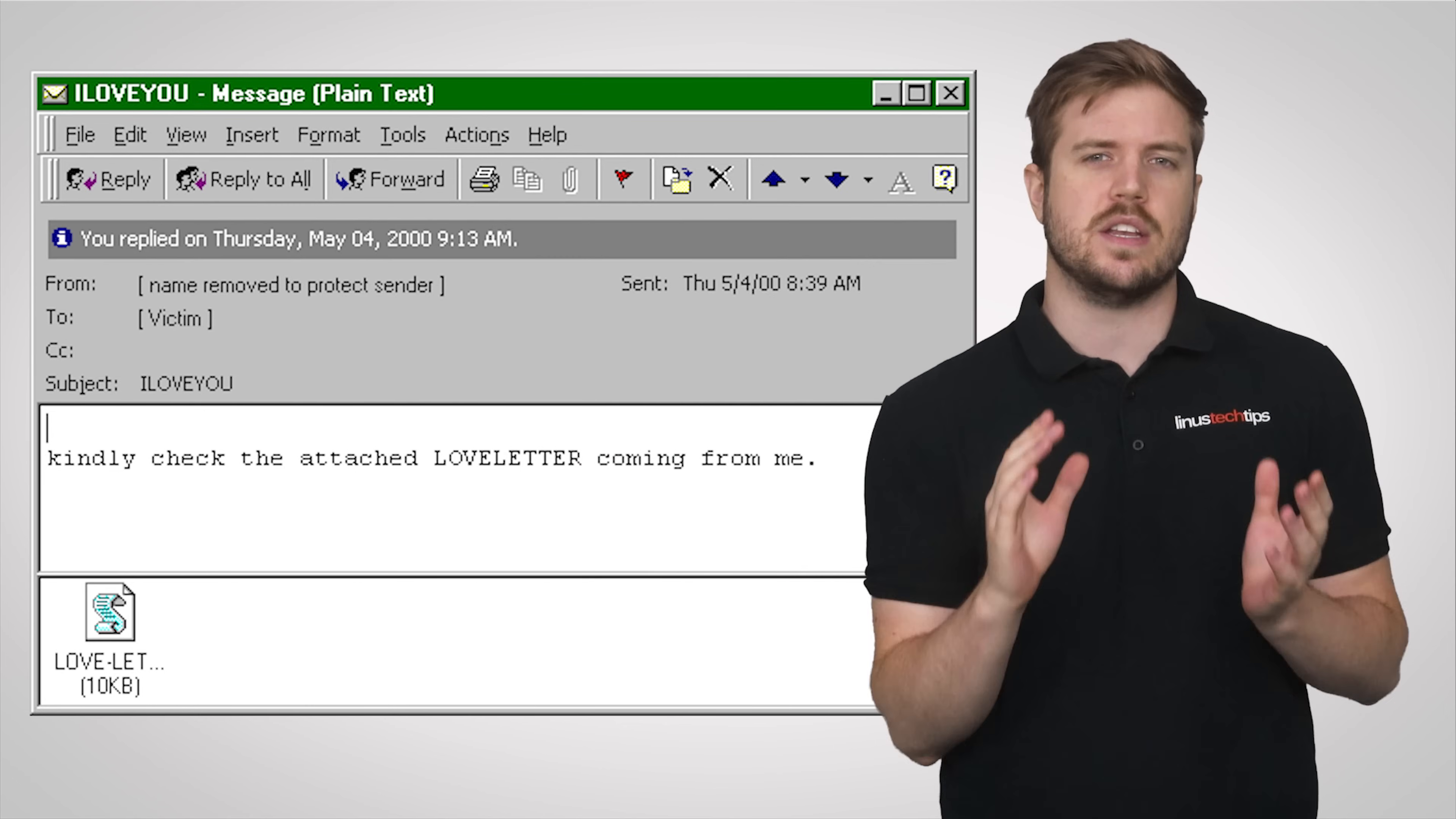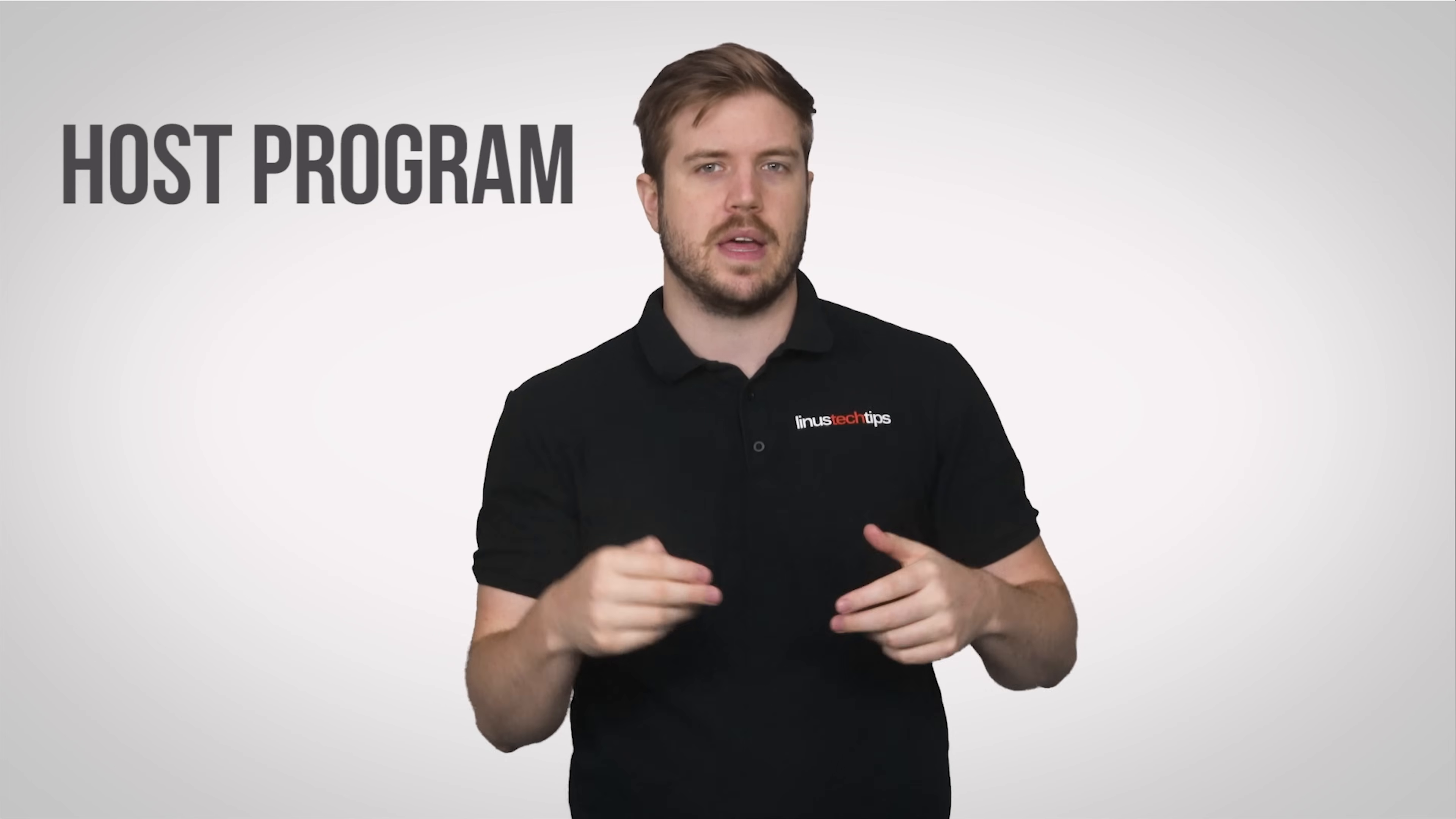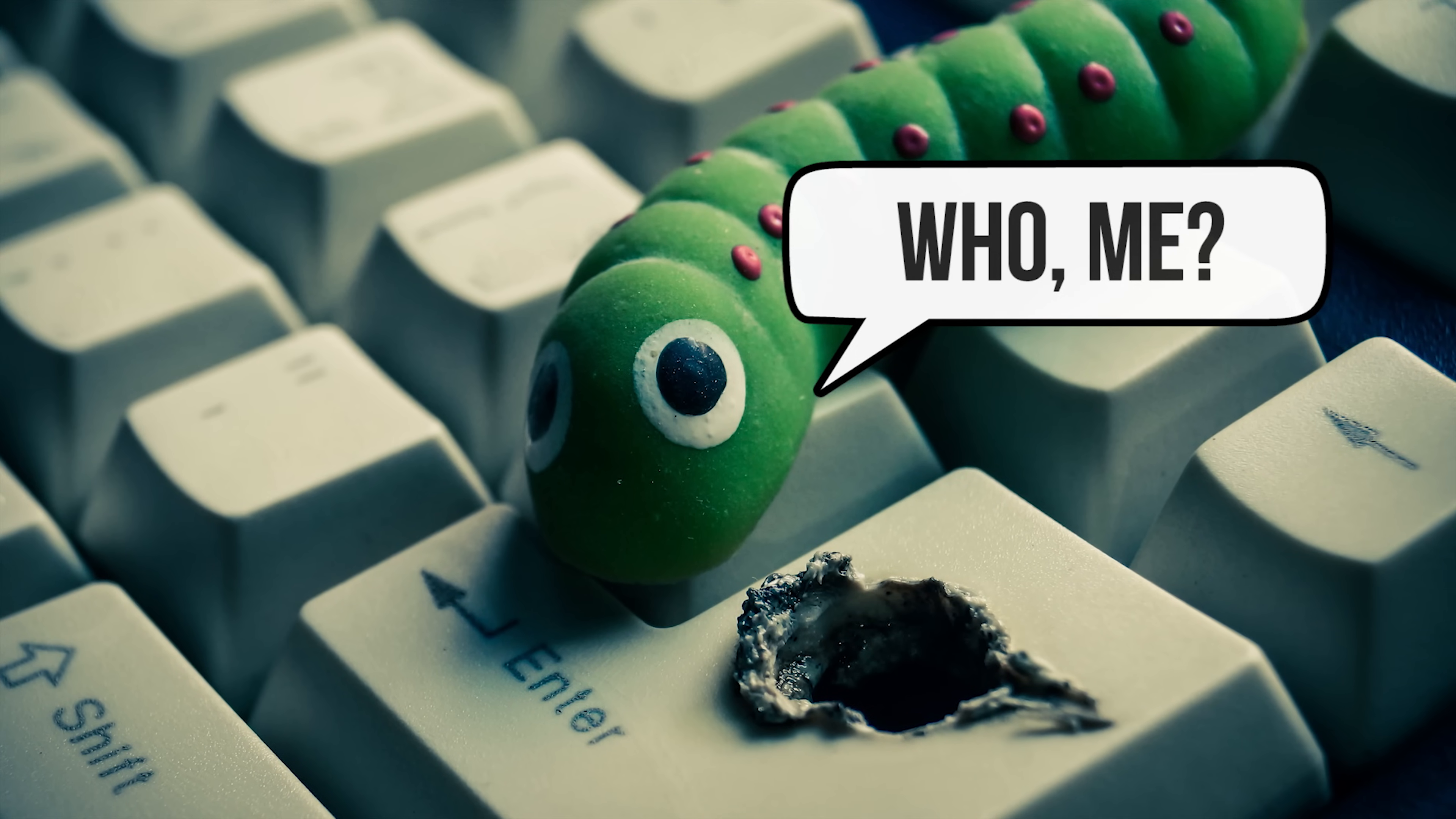For example, the famous I Love You attack back in 2000 was caused by a standalone script or program disguised as a love letter and sent out via email attachment. So because it emailed itself to other people in the victim's contact list rather than relying on inserting itself into other programs to spread, there was no host program that I Love You infected. It would be more accurately referred to as a worm rather than a virus.